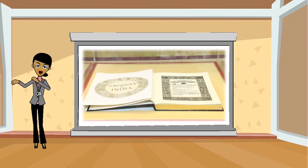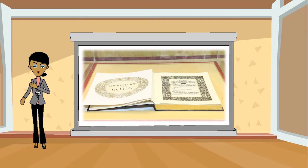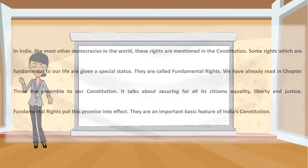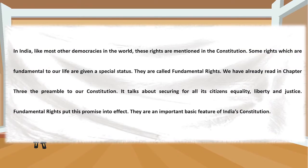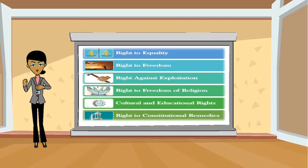India is one of the largest democracies in the world. The rights of citizens are protected in India by writing them down in the constitution. Special status is given to rights that are fundamental and important in our daily lives — these are termed fundamental rights. In Chapter 2, we read about the preamble and how it secures equality, justice, and liberty of the common people of India. Fundamental rights are an important feature of the constitution. You have already read the six fundamental rights; let's recall them.